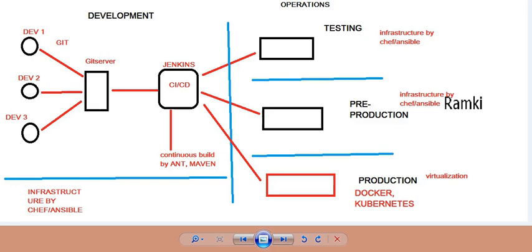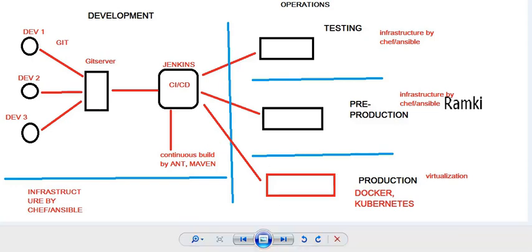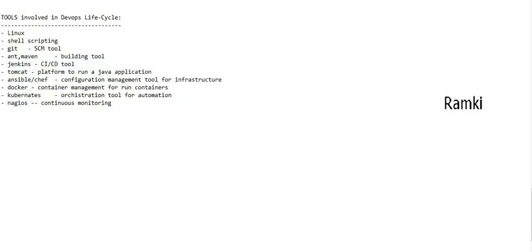And Kubernetes is a container management system. The container management system is used to run a small virtual machine. The container runs a small virtual machine. The remaining tools in the pipeline are Git, Maven, Jenkins, Tomcat, Ansible, and Docker. Without Linux, we can't work with DevOps — that is the main thing.